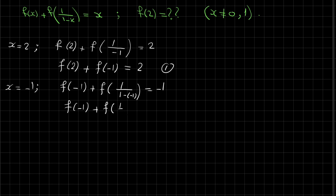That is f(-1) + f(1/2) = -1. This is equation 2. Again here we have f(1/2), so let's see what happens if we substitute x = 1/2.